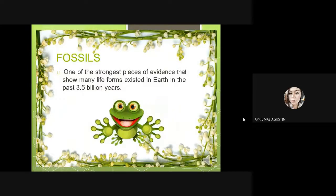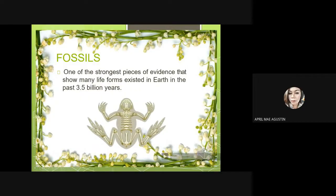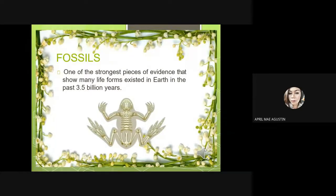If one of your answers is fossils, then you are right. Fossils are one of the strongest pieces of evidence that show many life forms existed on earth in the past 3.5 billion years. A fossil is any preserved remains, impression, or trace of any once-living thing from a past geological age. Examples include bones, shells, exoskeletons, stone imprints of animals or microbes, objects preserved in amber, hair, petrified wood, oil, coal, and DNA.